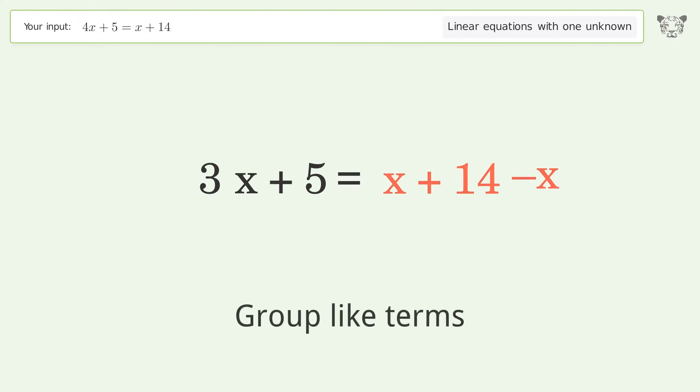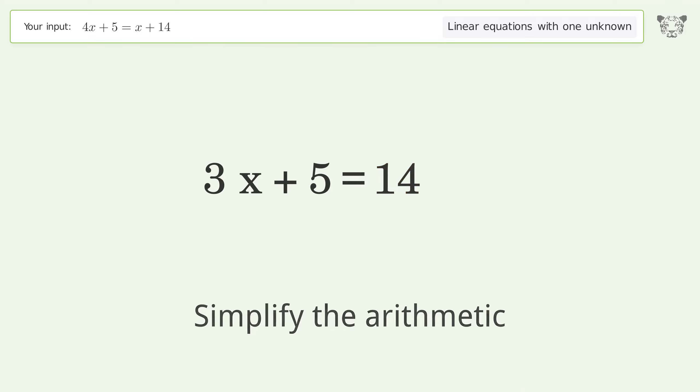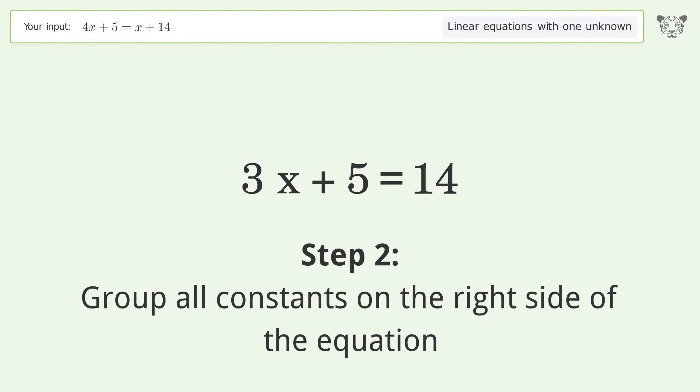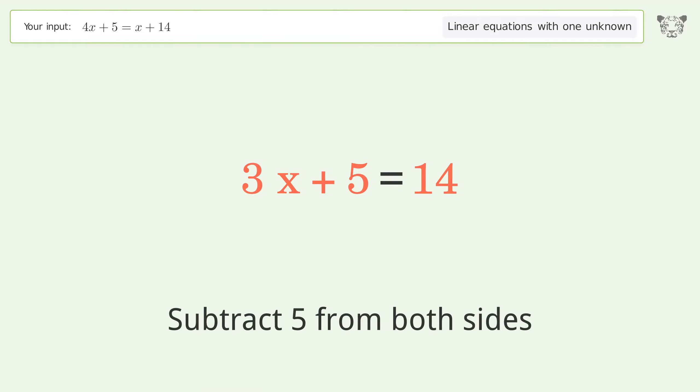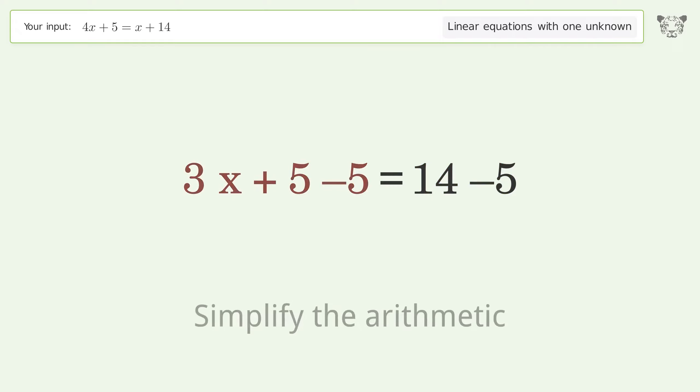Group like terms. Simplify the arithmetic. Group all constants on the right side of the equation. Subtract 5 from both sides. Simplify the arithmetic.